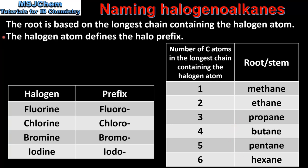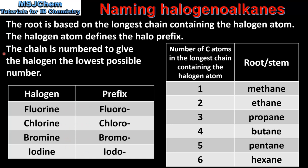The halogen atom defines the halo prefix. If the halogen is fluorine the prefix is fluoro; if it's chlorine, chloro; bromine, bromo; and iodine, iodo. Finally, the longest carbon chain is numbered to give the halogen atom the lowest possible number.